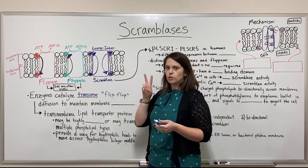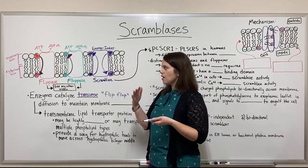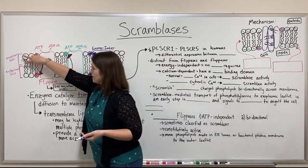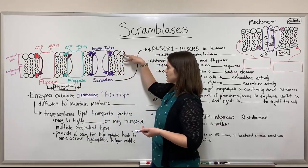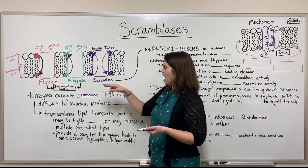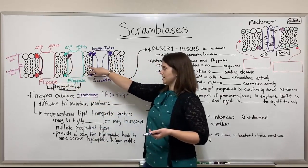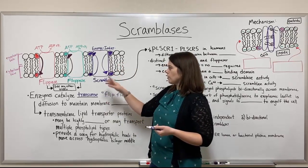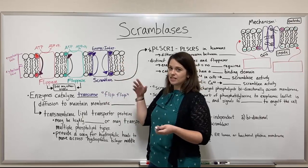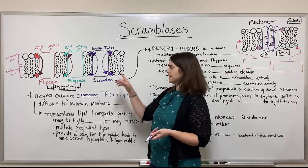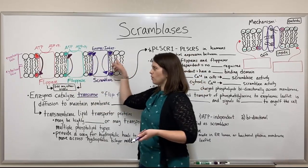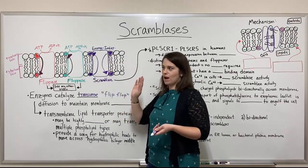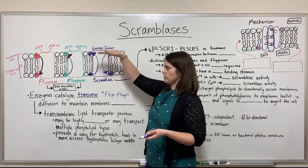These membranes have two faces or two leaflets that make up the phospholipid bilayer — bilayer meaning two. There is basically an exoplasmic face of lipids on the outside and a cytoplasmic face on the inside, touching the cytoplasm. The phospholipids in these membranes can diffuse laterally very easily, meaning they move around staying in the same face, whether the exoplasmic or cytoplasmic face.